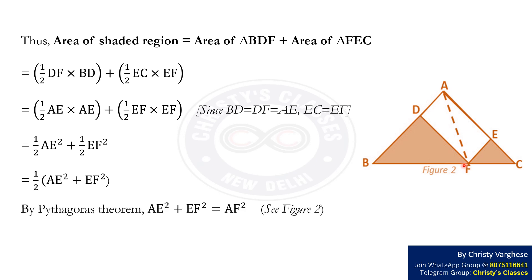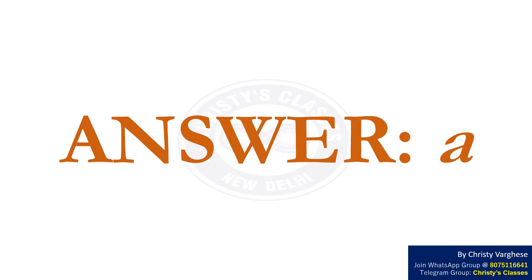Therefore, area of the shaded region equals half AF squared. Hence, the right answer to the question is option A.